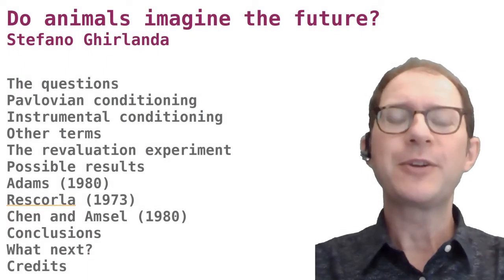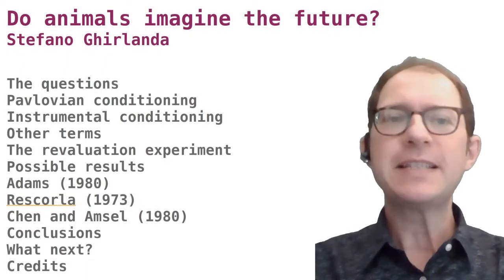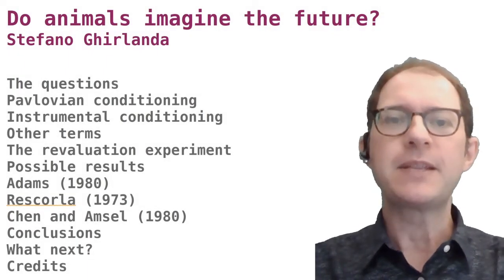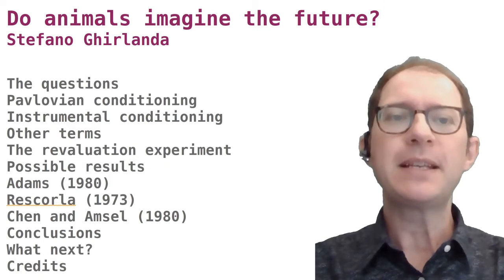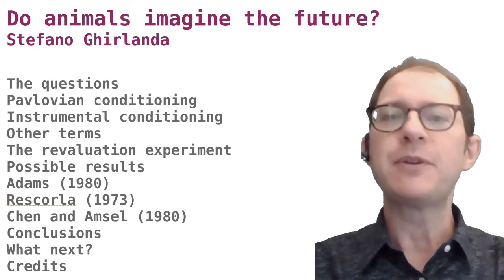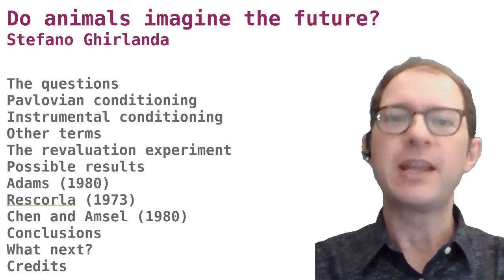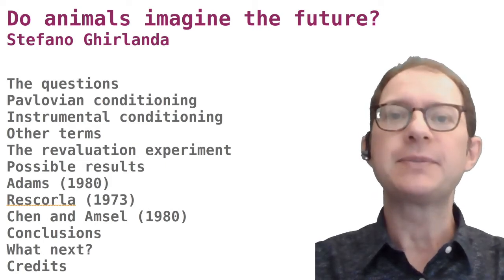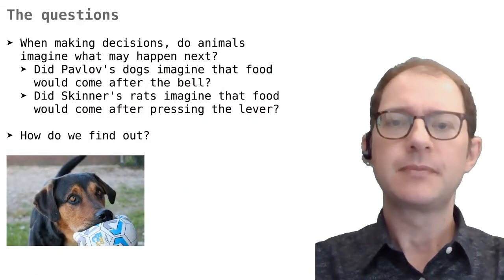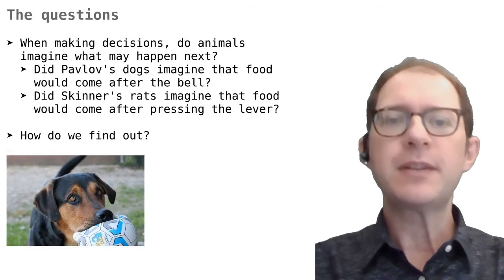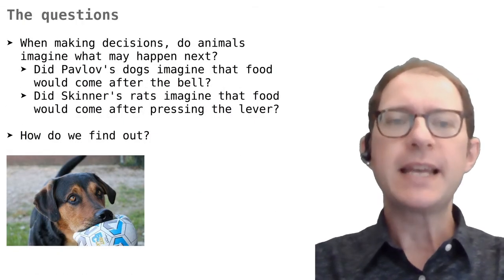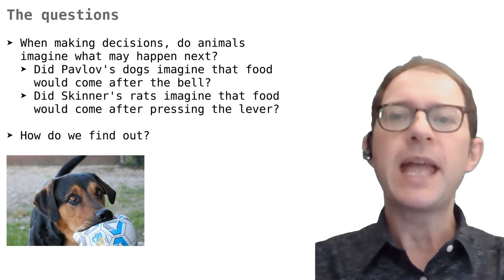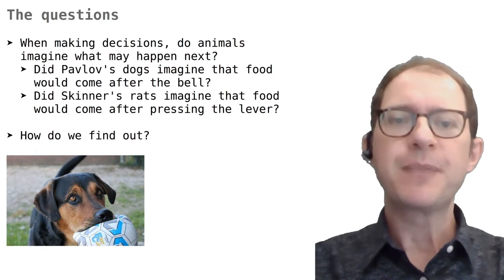Welcome back to our learning course. In this lesson we will look at a classic question that has kept animal psychologists busy for about a century, and we still cannot agree on an answer. The question is: when deciding what to do, do animals imagine what may happen next?